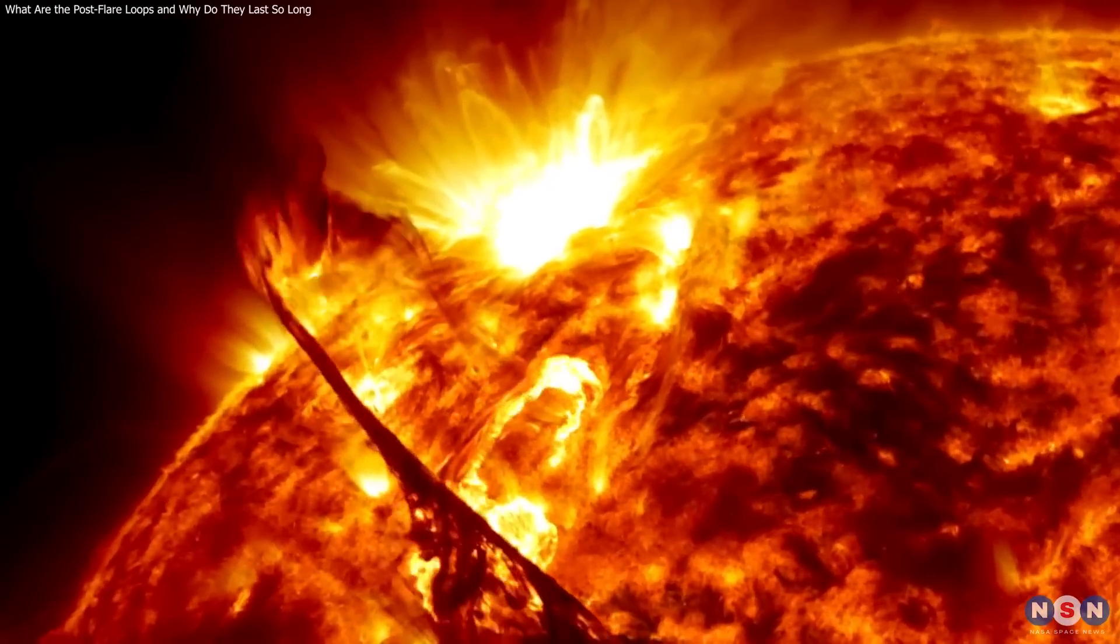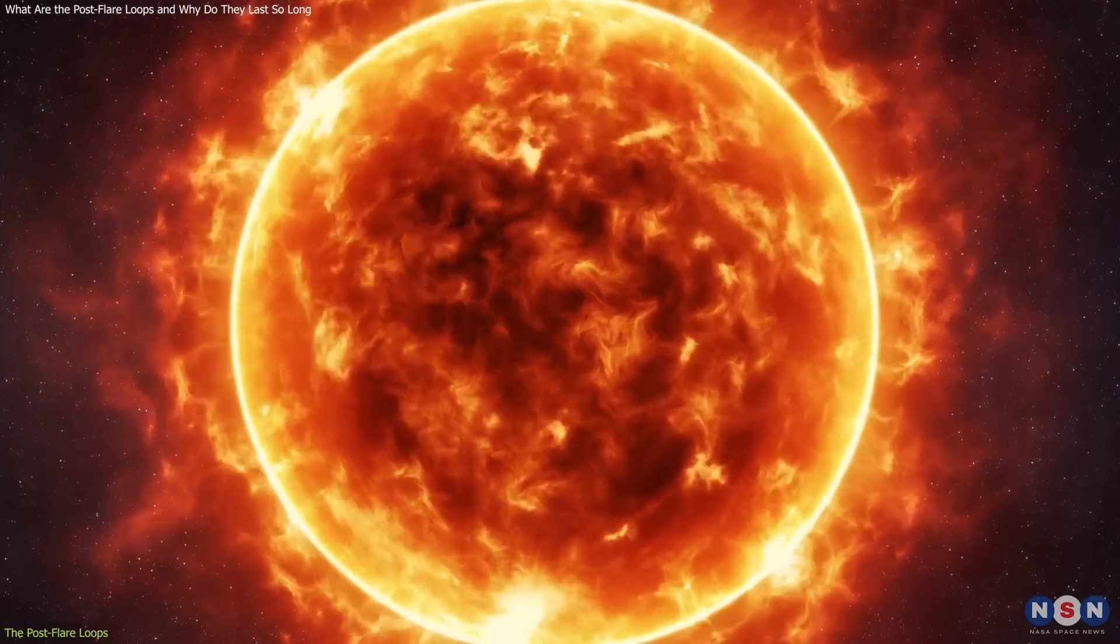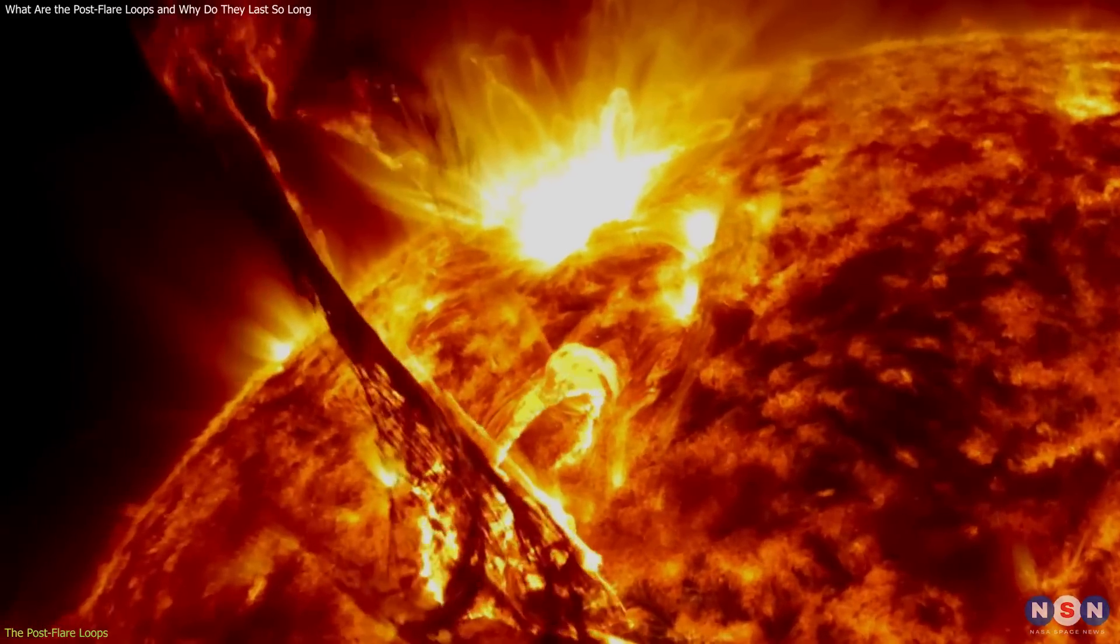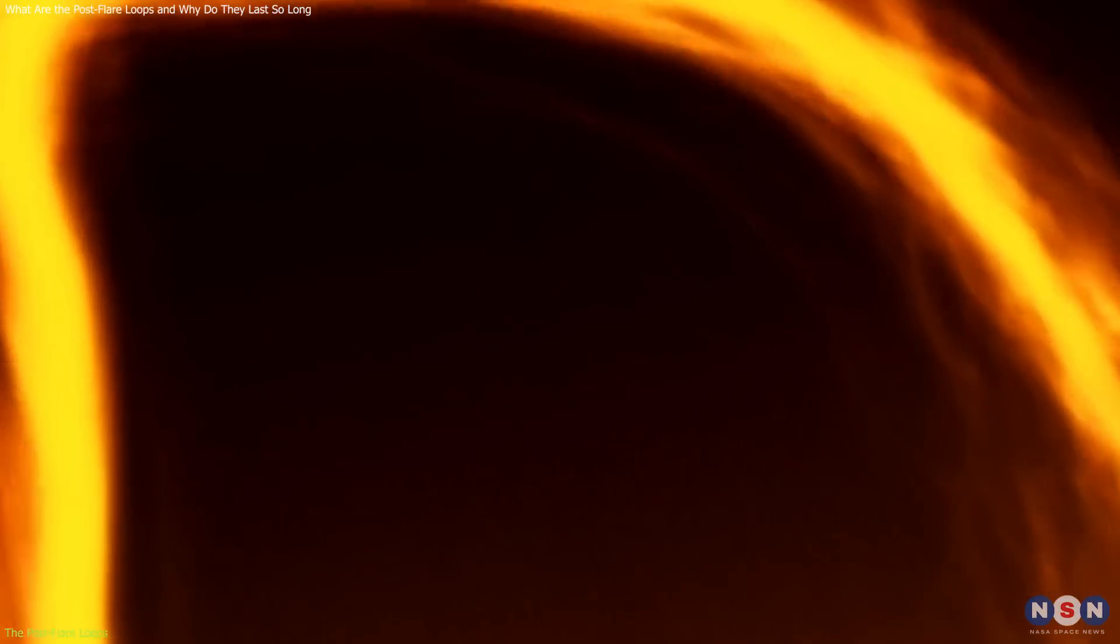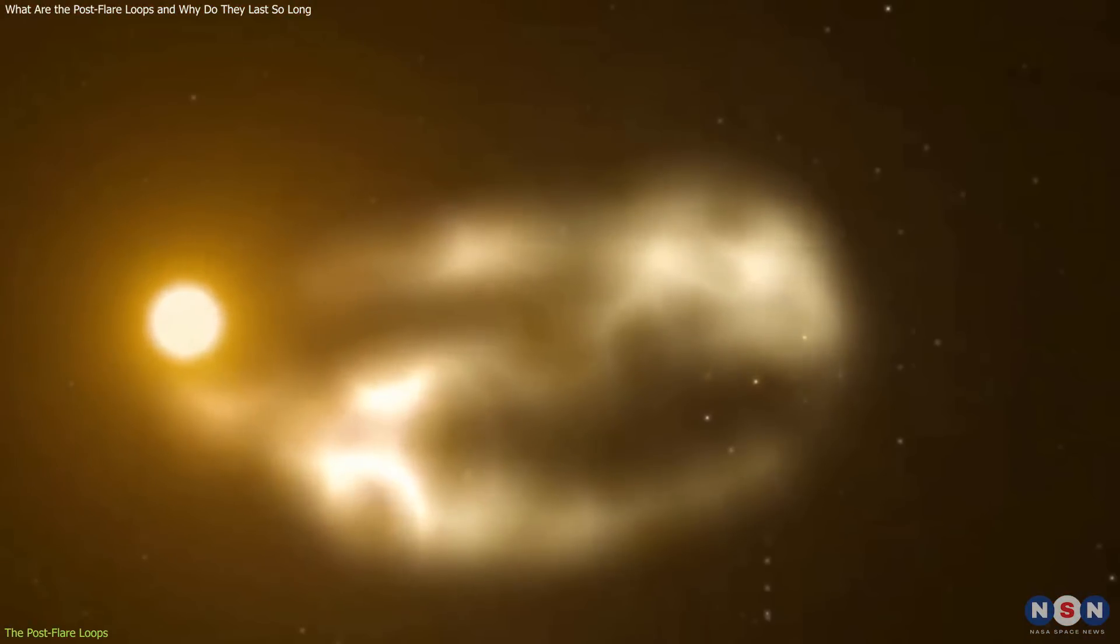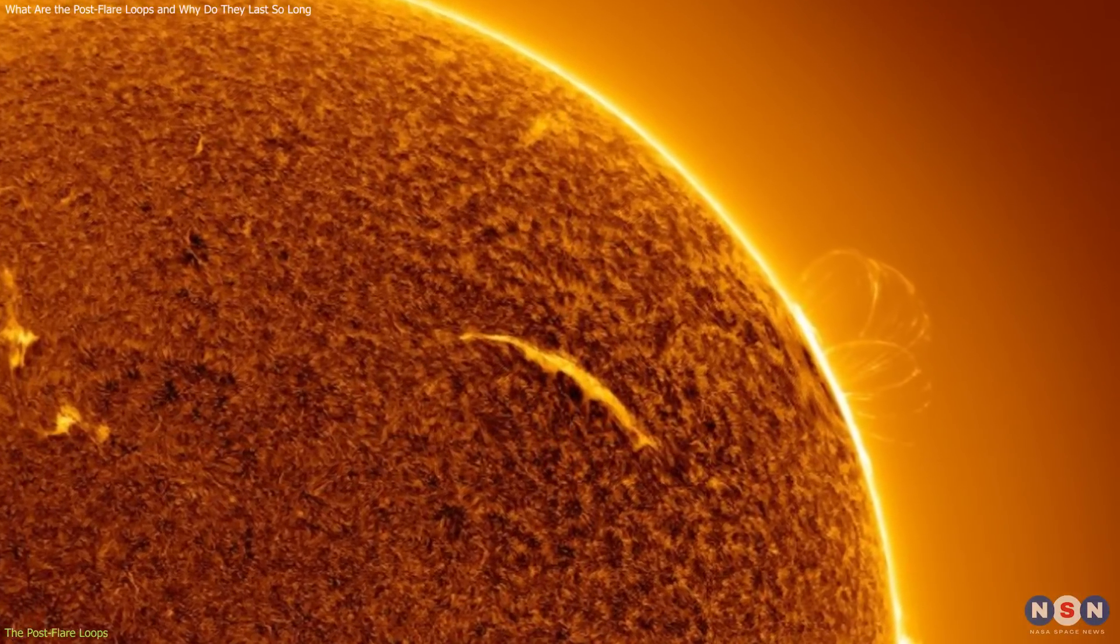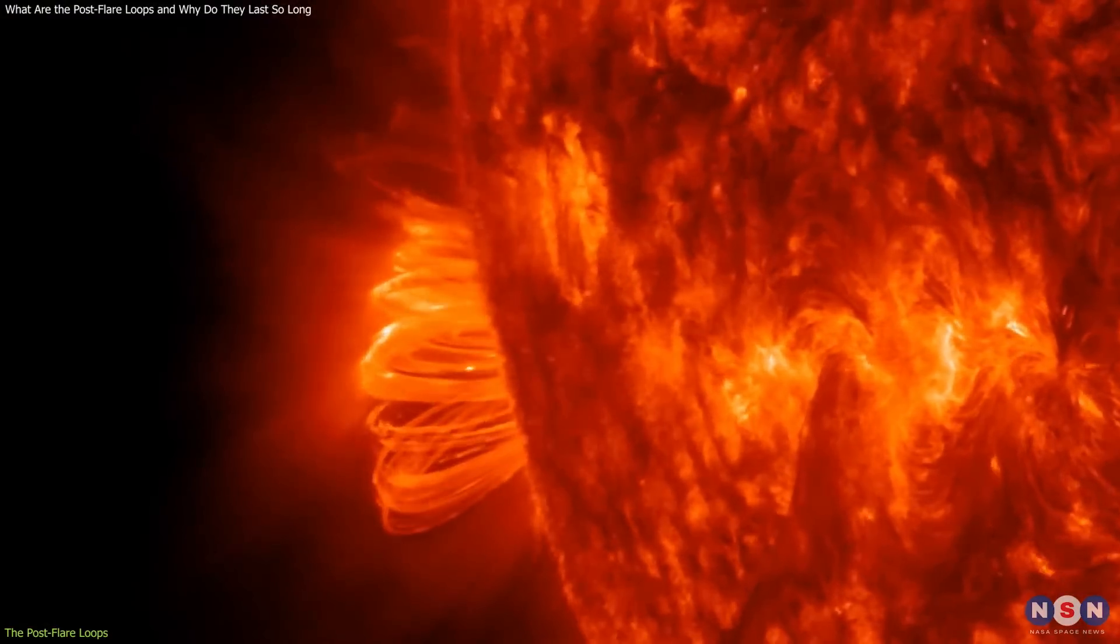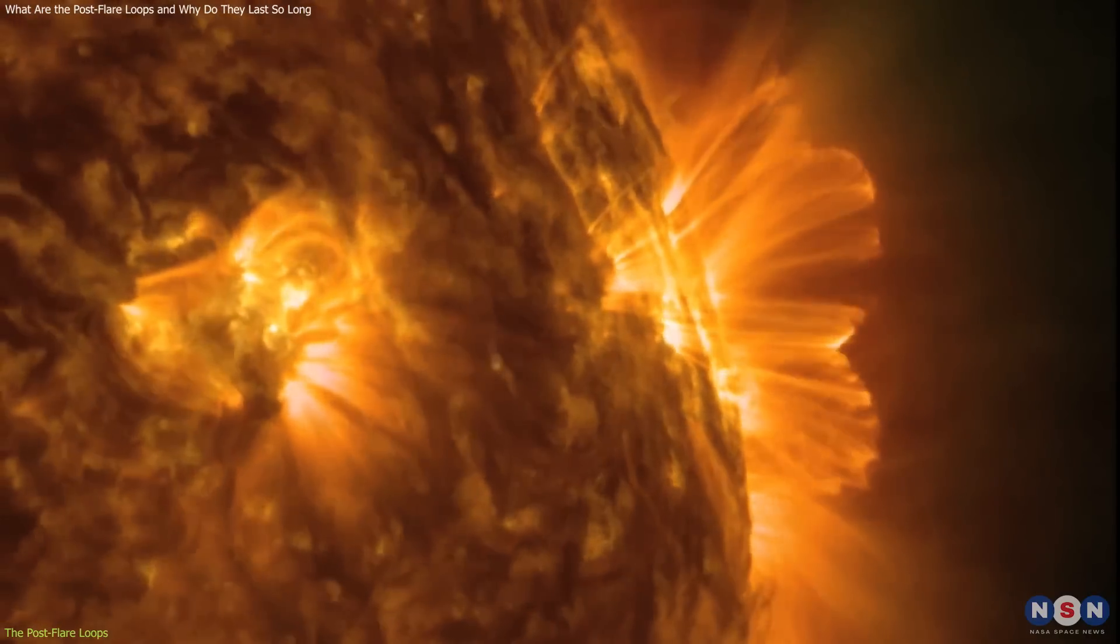After the solar flare and the CME, something else happened on the sun that caught the attention of scientists and observers. On the sun's surface, where the flare originated, there appeared some faint and twisted loops of plasma that seemed to hang in the air. These post-flare loops are very stable and can last for hours or even days after the flare. But how do these loops form, and why do they persist for so long?